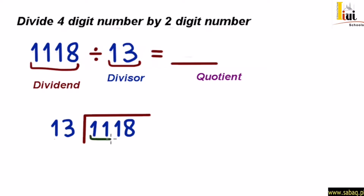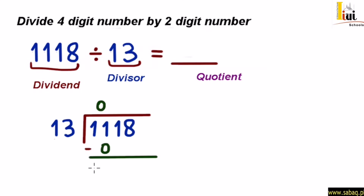अब इन numbers को divide करना शुरू करते हैं। divide का निशान लगाएंगे, इसके अंदर 1118 और बाहर divisor 13 लिखेंगे। हम dividend को left side से देखना शुरू करते हैं। बाहर वाले number के 2 digits हैं, तो अंदर वाले number के भी left side से पहले 2 digits लेकर divide करना होता है। लेकिन यह बनता है 11, और 11, 13 से छोटा है। तो 13 को 0 से multiply करेंगे: 13×0 = 0। तो 11 minus 0 = 11 नीचे आ जाएगा।